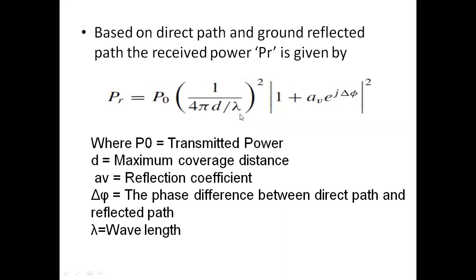In our mobile communication environment, Av, the reflection coefficient, is minus one. This is because the cell site antenna height is low, which gives a small grazing angle, and in such cases the reflection coefficient is Av = -1.